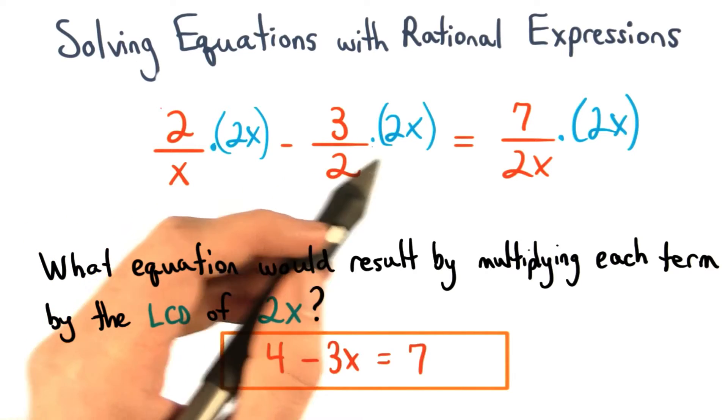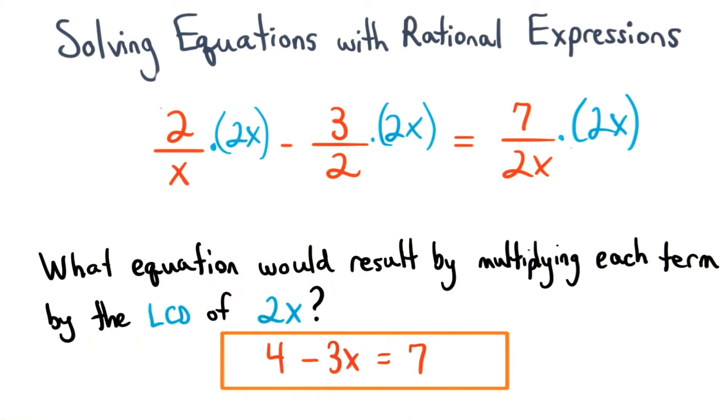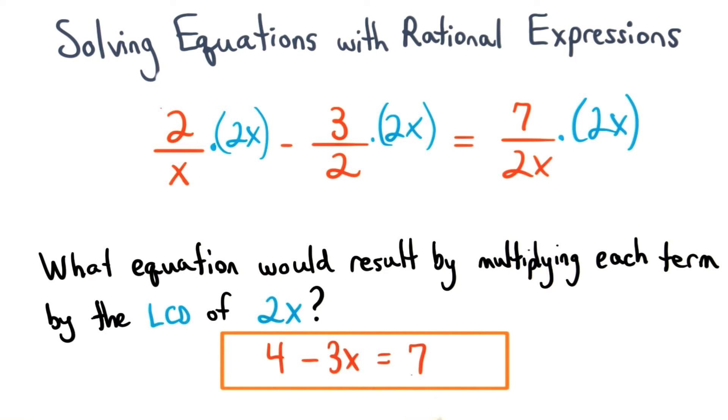If we multiply each term by 2x, we'll get 4 minus 3x equals 7. Nice algebraic thinking if you got that one correct.